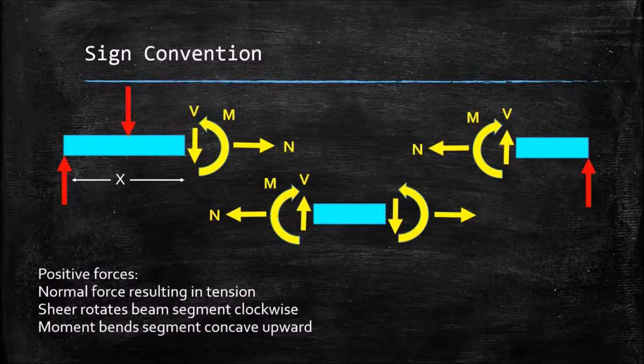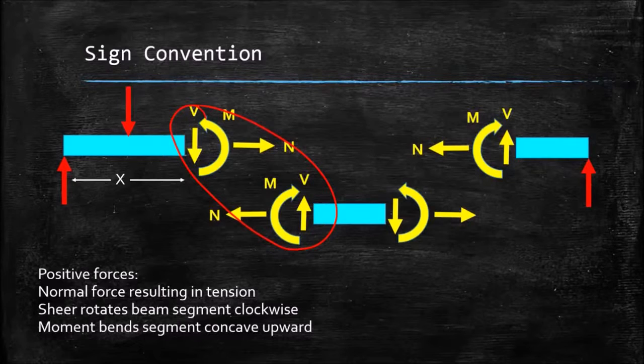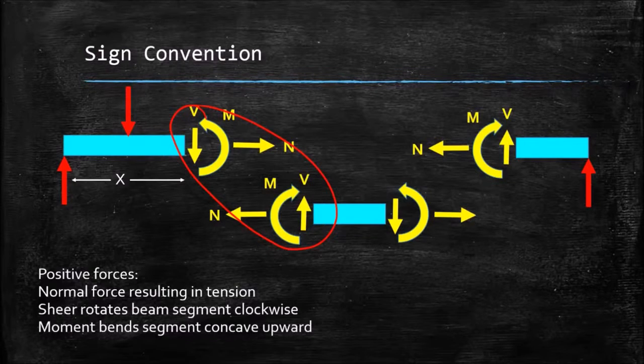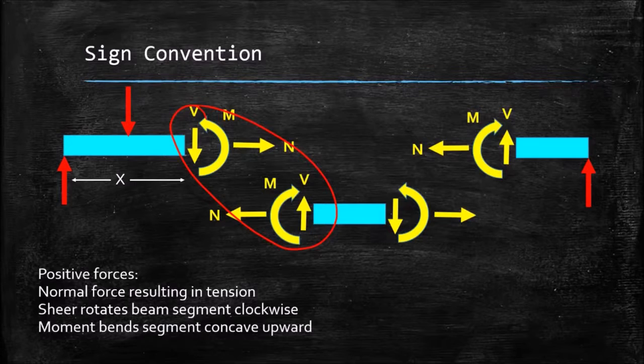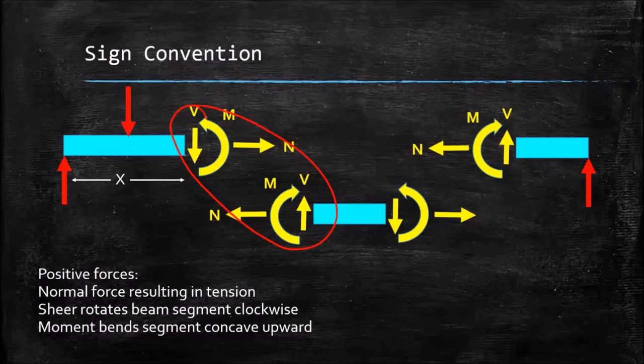And if we look at a matching pair here, we can see that the forces are all drawn opposite once they're cut in sections and they're exposed, but internally, they have to be the same value.